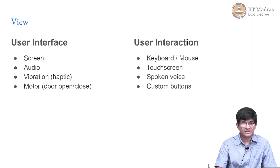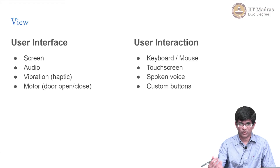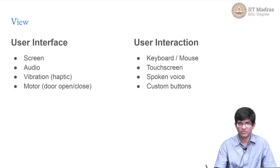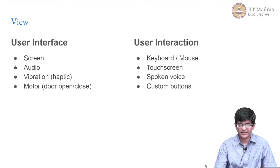The other side is user interaction. The interface is what it provides to you — what you see or feel — whereas user interaction is how you actually give inputs to the system. In the case of a desktop computer, the most common would be a keyboard or mouse. With mobile phones or tablets, it would be a touch screen.